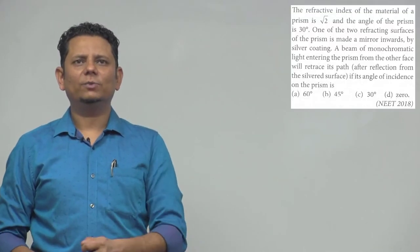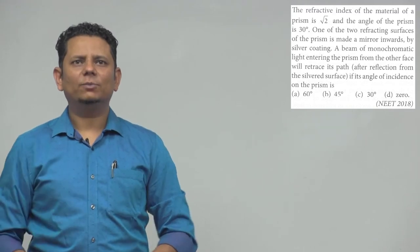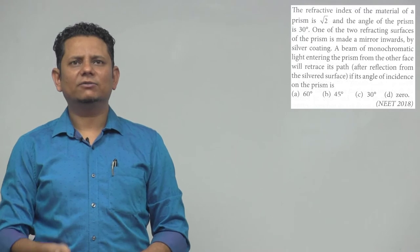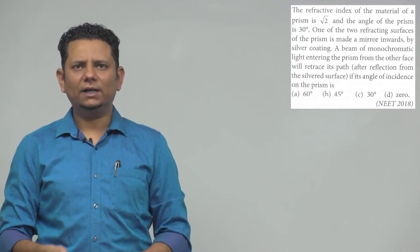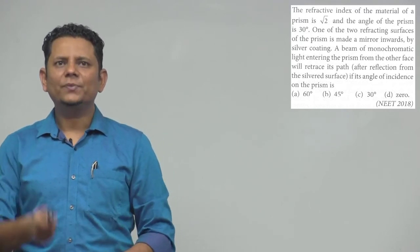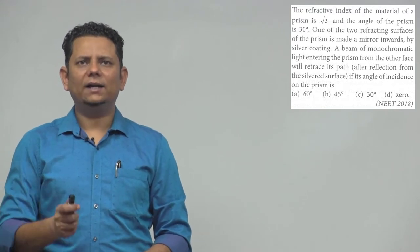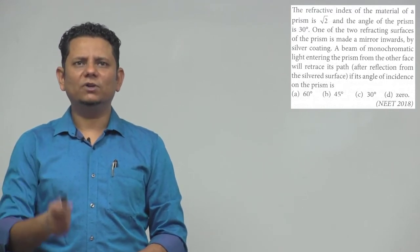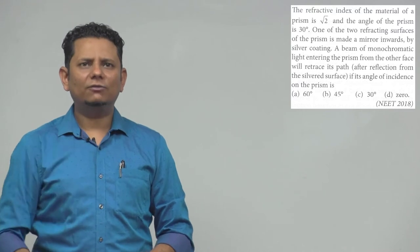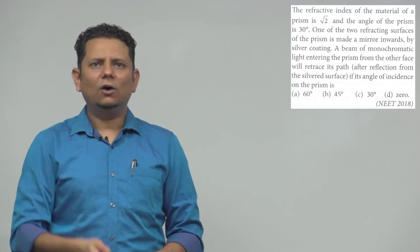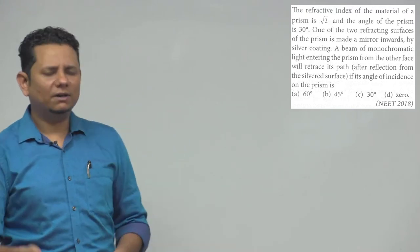This question says: the refractive index of the material of a prism is root 2, the angle of prism is 30 degrees. One of the two reflecting surfaces of the prism is made mirror-like by silver coating. A beam of monochromatic light entering the prism from the other face will retrace its path after reflection from the silver surface if the angle of incidence on the prism is — options are 0, 30, 45, or 60 degrees.